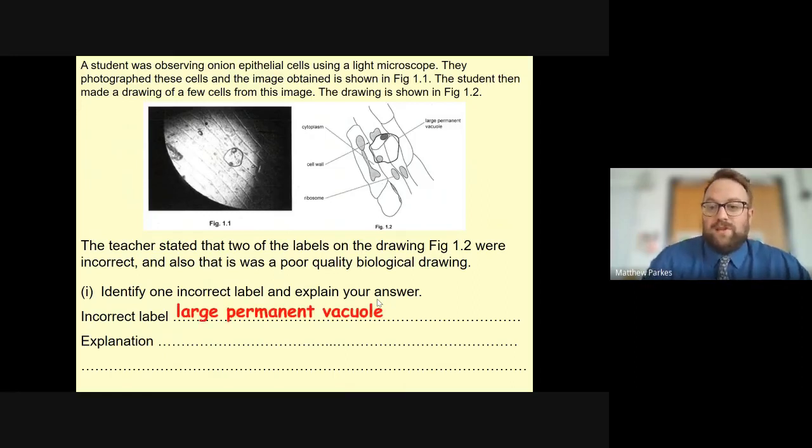One of the options: they have labeled this structure here as a large permanent vacuole. That is, as you can see from the picture, an air bubble, a common mistake to make particularly if you don't put your cover slip on correctly. The explanation is that this is an air bubble. If you got that, then congratulations, you got two marks on your first A-level biology paper. The other option is this at the bottom has been labeled as a ribosome. It is in fact obviously a nucleus. That is far too large to be a ribosome. Ribosomes are not going to be visible under a light microscope.